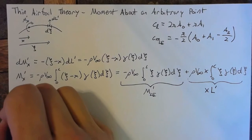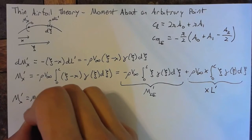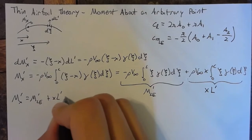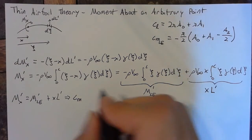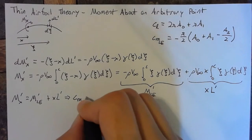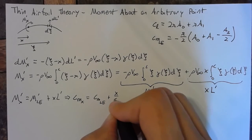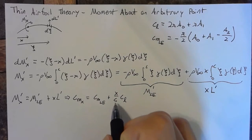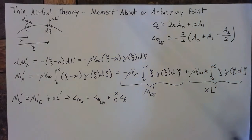So what this means is that our moment about x per unit span is equal to the moment about the leading edge plus x times our lift. We can rewrite this in terms of the coefficients to say that our coefficient of the moment about the point x is equal to the coefficient of the moment about the leading edge plus x over c times our lift coefficient. The reason we divide by c here is because our moment coefficient is divided by c squared, whereas our lift coefficient is only divided by c, so we have an extra c to account for.